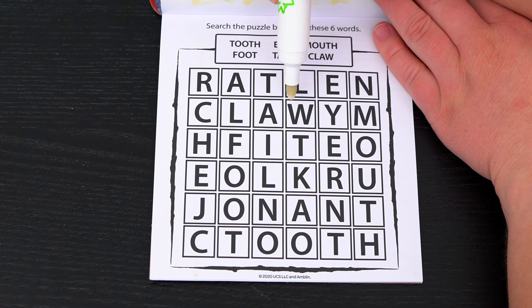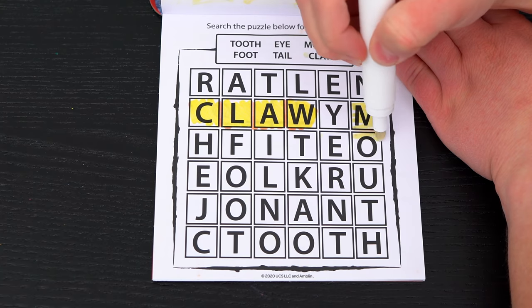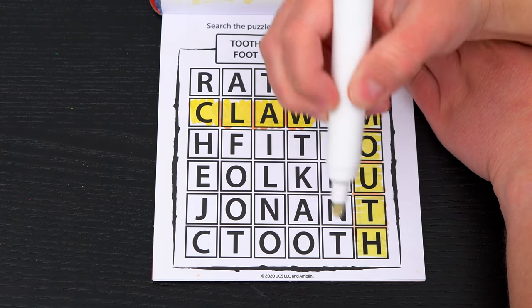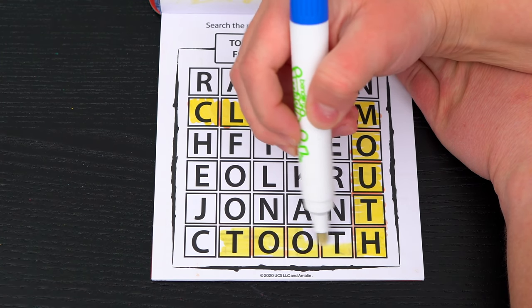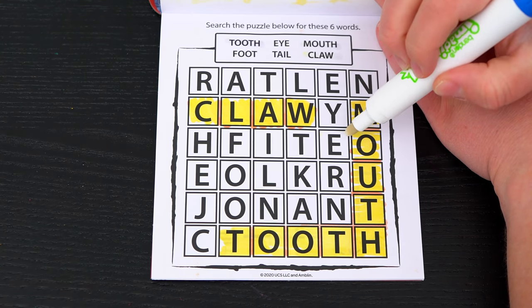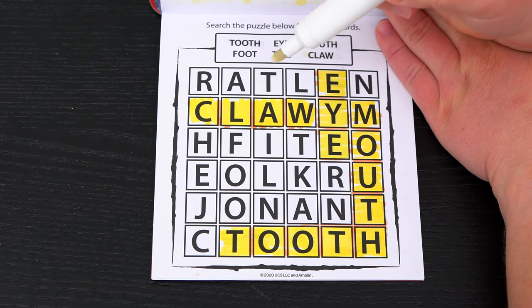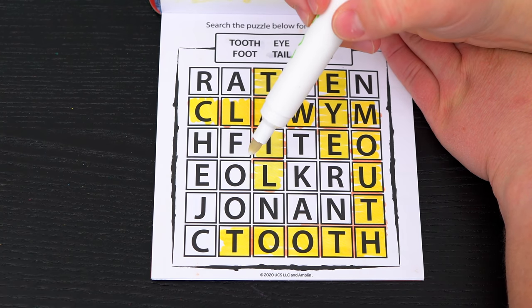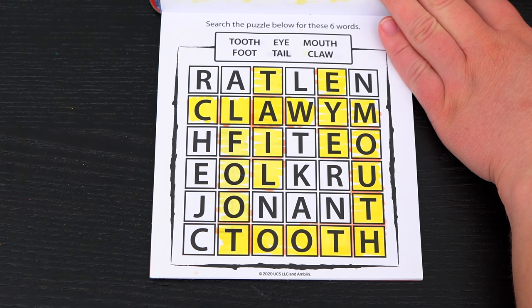And here's mouth down the side! There's tooth across the bottom! And here's eye down this way! Okay, we just need to find foot and tail! Oh look, here's tail right here! And here's foot, that's our last one! Yay, we found them all!